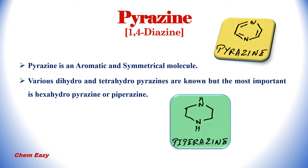Pyrazine is 1,4-diazine. In this structure, the first and fourth positions have a nitrogen atom, so it is called 1,4-diazine, that is pyrazine. Pyrazine is an aromatic compound and a symmetric molecule. Various dihydro-derivatives and tetrahydro-derivatives of pyrazines are known, but the most important derivative is hexahydropyrazine, which is called piperazine. This is the structure of piperazine.